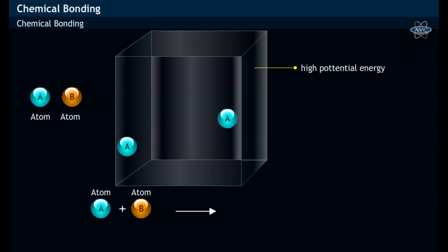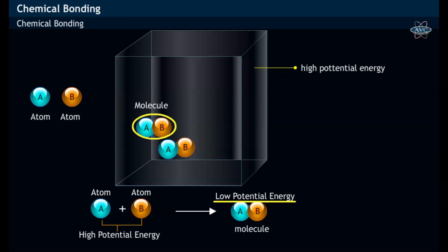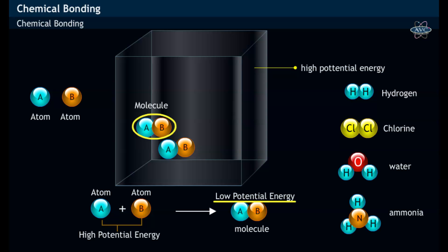Thus, atoms in order to reduce their potential energy combine with each other and form molecules like hydrogen, chlorine, etc., and compounds like water, ammonia, etc.